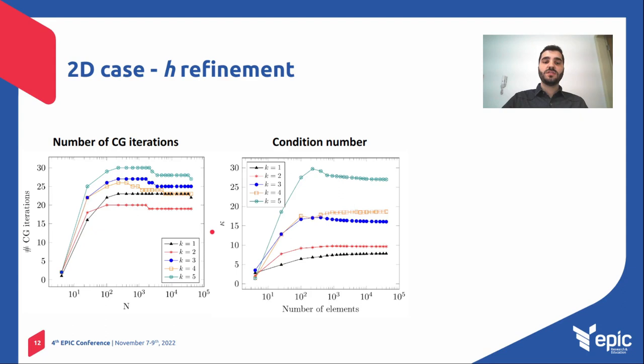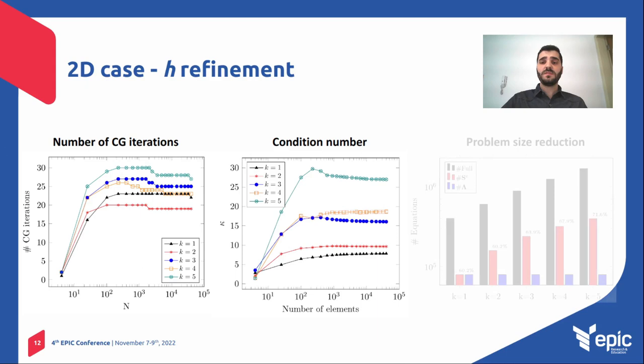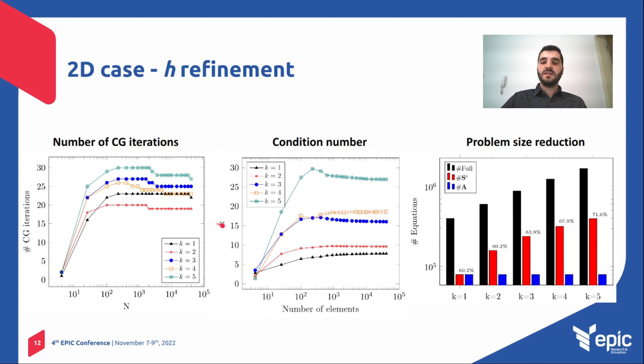So we can say that the condition number of our matrix is independent of the mesh refinement. And finally, if we look at the problem size reduction, we can see that the condensed problem we are solving represents around 30-40% of the original problem, which is a high reduction in the problem size.